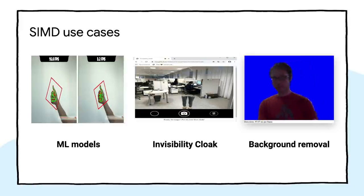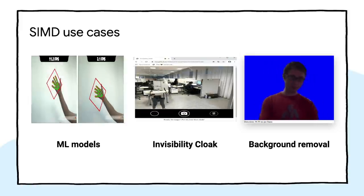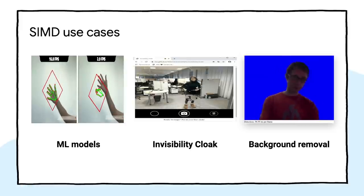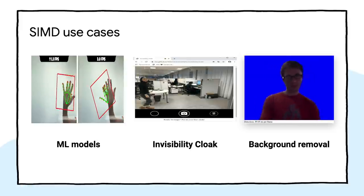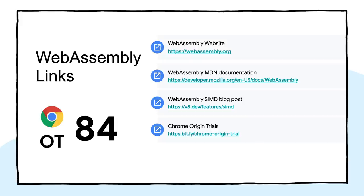Zoom has an awesome feature where you're able to automatically remove the background so that people in conferences can't see all the random stuff in your background, and then replace it with fun videos or animations. WebAssembly SIMD is doing an origin trial in Chrome M84, which will start rolling out to users on July 14th. Origin trials are basically a mechanism for you to test out features with production users while we may still be making some changes to the API.